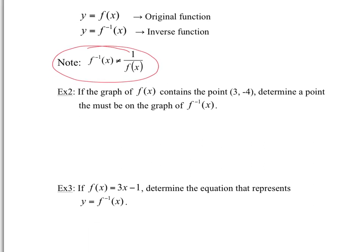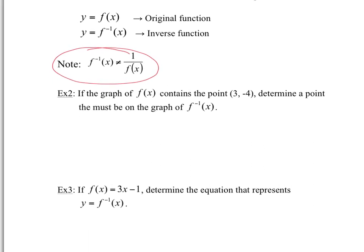Example 2: The graph of f(x) contains the point (3, −4). Determine a point that must be on the graph of the inverse. That's simple — all you do is flip the point around. The point on the inverse would be (−4, 3), because all we did is flip the x and y values.